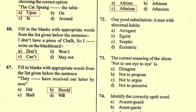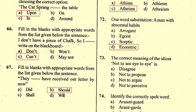Question number 72: One word substitution — 'a man with abnormal habits.' The right option is D, 'eccentric'. Note: arrogant means abhimani, egoist means ahangwadi, and sceptic means shankaashil in Hindi, but a man with abnormal habits is called eccentric.